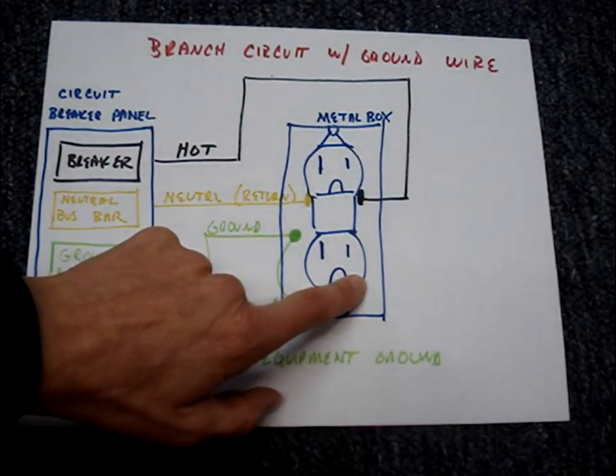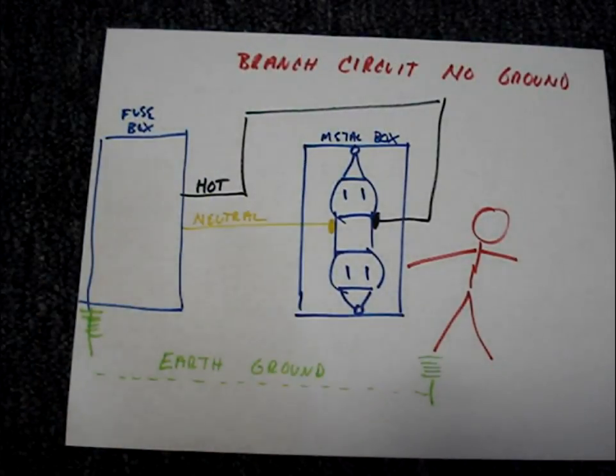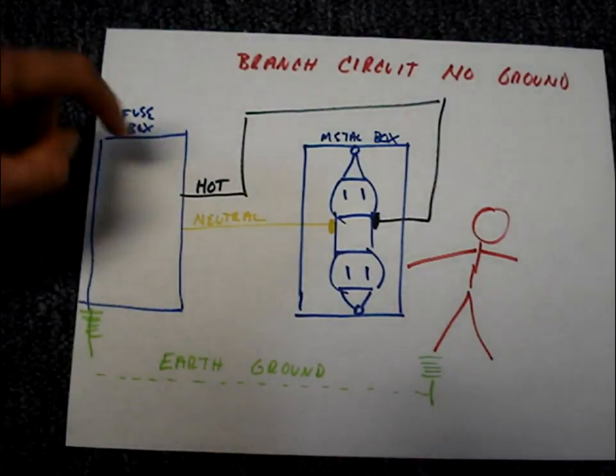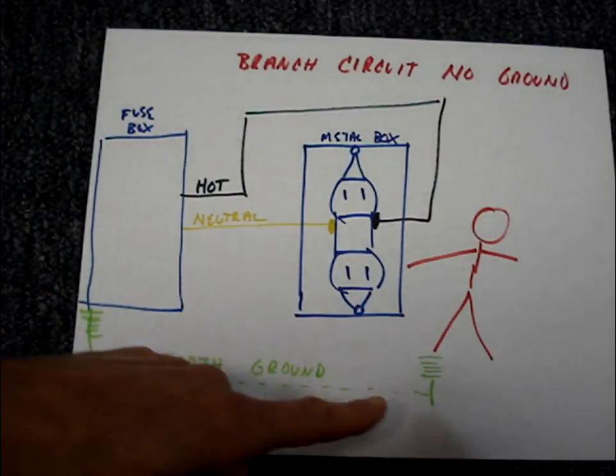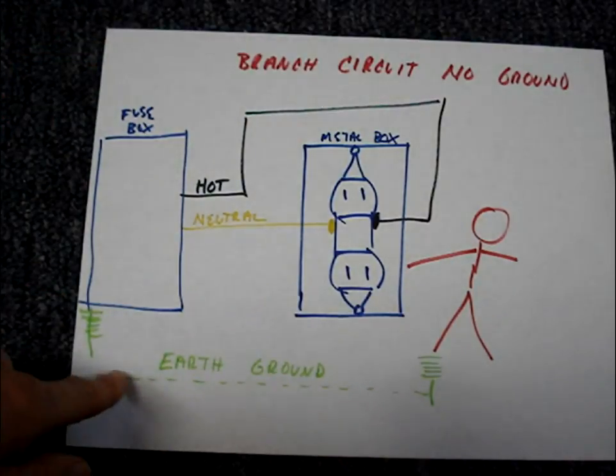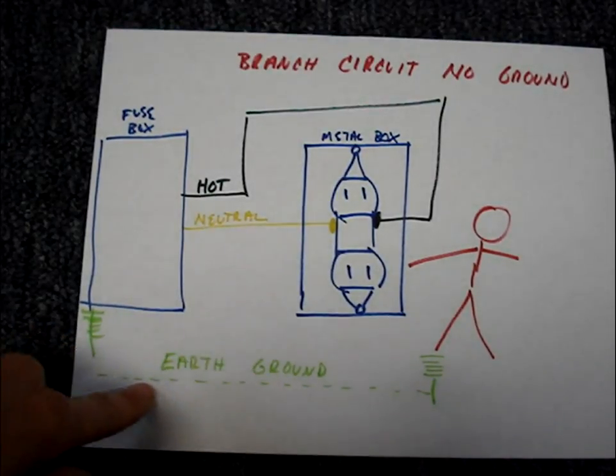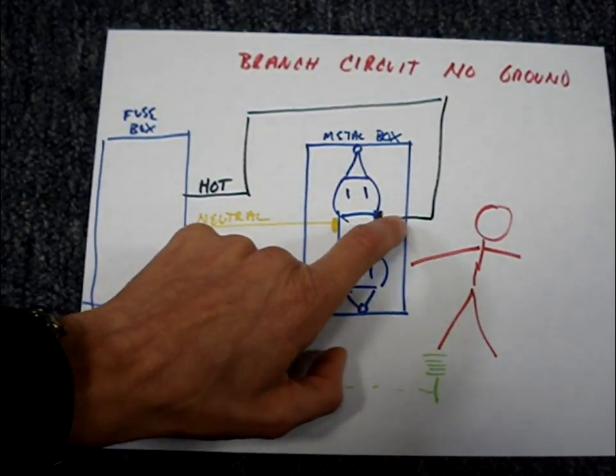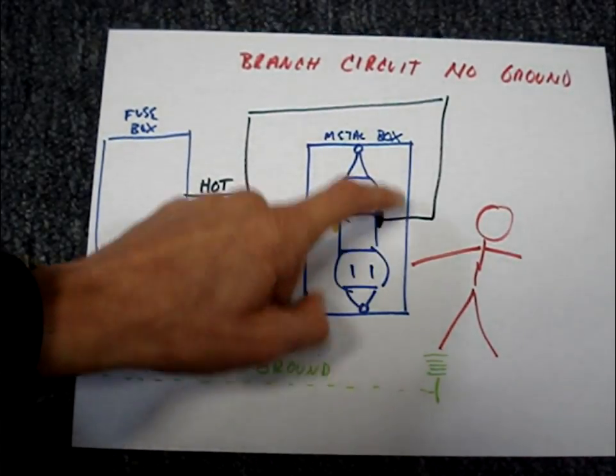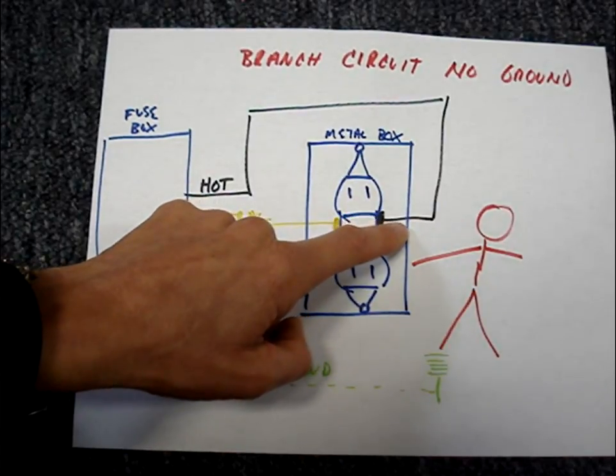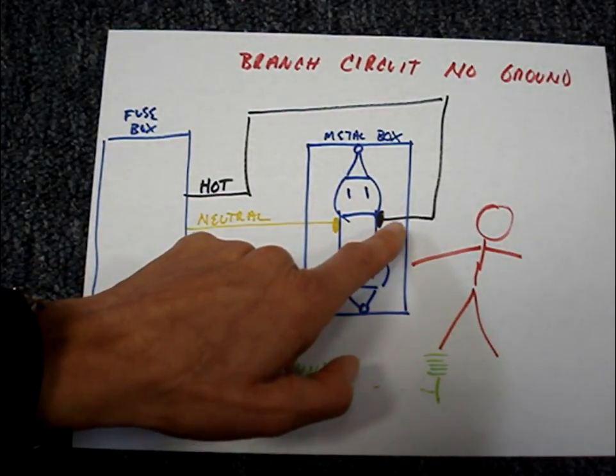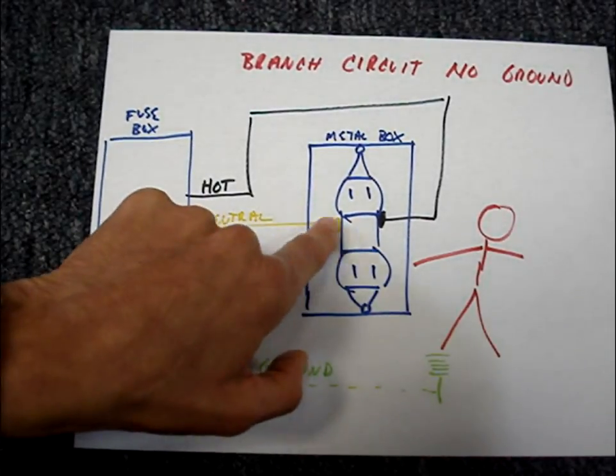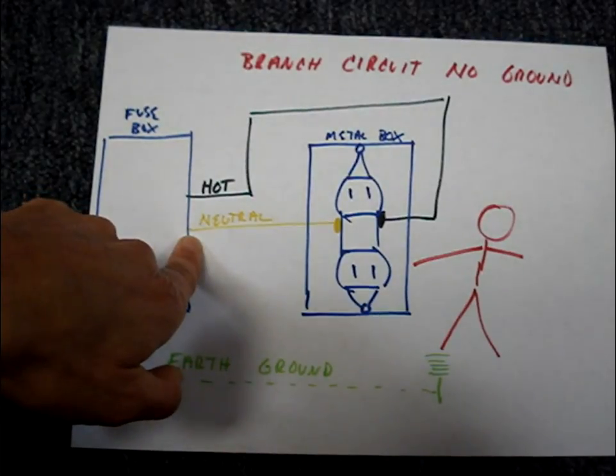So here's a circuit that only has a hot and neutral wire. The earth under the right conditions can act like a wire. If the black hot wire on this circuit made contact with the metal box, it would energize it. It would have no path back to its source because this isn't open so it couldn't return on the neutral wire.